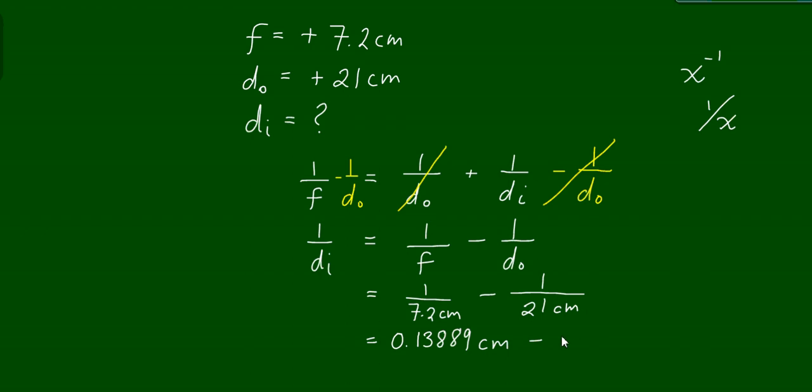If you enter 7.2 and hit the reciprocal button, you get 0.13891 centimeters. The reciprocal of 21 comes out to be 0.04762 centimeters. When I do the math, this comes out to be 0.019127 centimeters. But of course, it's not 1 over d_i that I'm interested in, I'm interested in d_i.